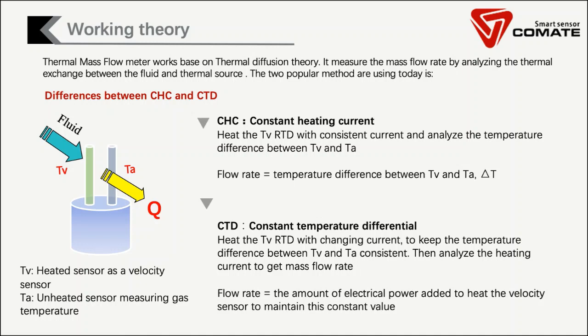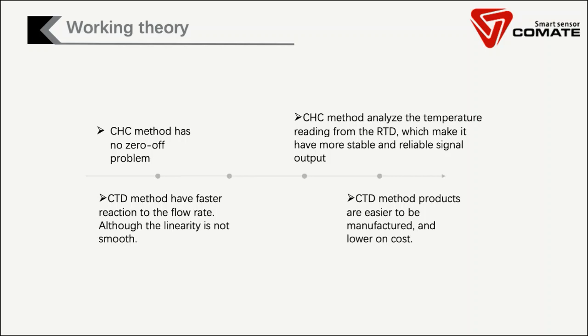There are two methods used in manufacturing. One is constant heating current (CHC): heat the TV with a consistent current and analyze the temperature difference between TV and TA. The other is constant temperature differential (CTD): heat the TV with changing current to keep the temperature difference between TV and TA consistent, then analyze the heating current to get mass flow rate. Both methods provide a way for gas measuring systems, but there are differences. CHC has no zero-drift problem and analyzes the temperature reading from the RTD, making it have more stable and reliable signal output. CTD brings faster response time and is easier to manufacture.